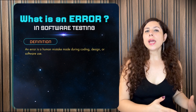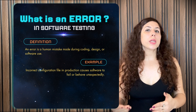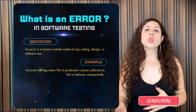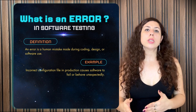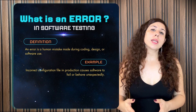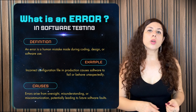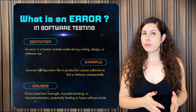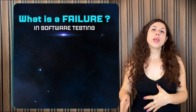Now, what is an error? An error is a human mistake made during coding, designing, or using software. For example, if the operations team makes a mistake in modifying the configuration file in the production environment of a banking system — even though the software binaries are correct — the wrong configuration file will cause the software to fail or lead to scenarios where the software raises errors like 'invalid input' or 'wrong configuration file.' Errors can occur due to oversight, gaps in understanding requirements, or miscommunication. An error might not always result in a defect visible to the end user, but can lead to future faults.